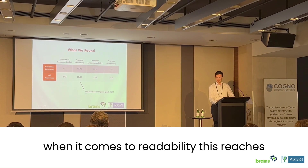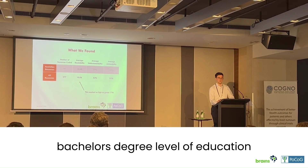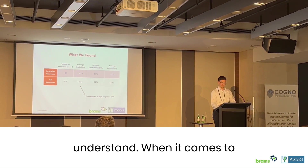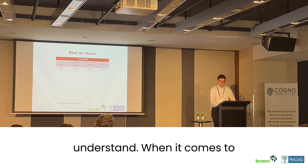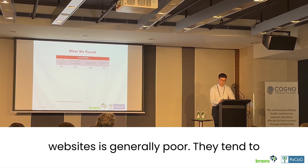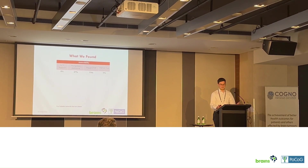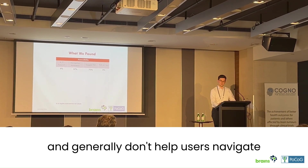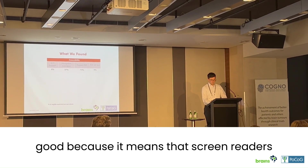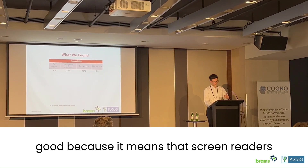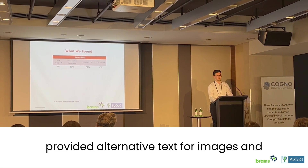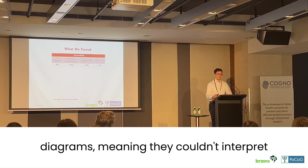When it comes to readability, this reaches as high as grade 17, which is beyond bachelor's degree level of education — and this is intended for patients to understand. Accessibility for websites is generally poor; they tend to not have audio-visual support such as text-to-speech, and generally don't help users navigate around the website. When it comes to PDFs, they're generally tagged, which means screen readers can interpret the document, but none had provided alternative text for images and diagrams, meaning they couldn't interpret these images.